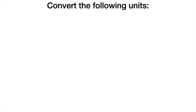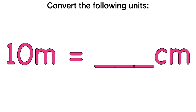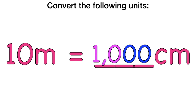How about this? Now, children, help me convert the following units. 10 meters — how many centimeters do we have? Remember, in every one meter we have 100 centimeters. So if we have 10 meters, how many centimeters do we have? Good job — we have 1,000 centimeters.